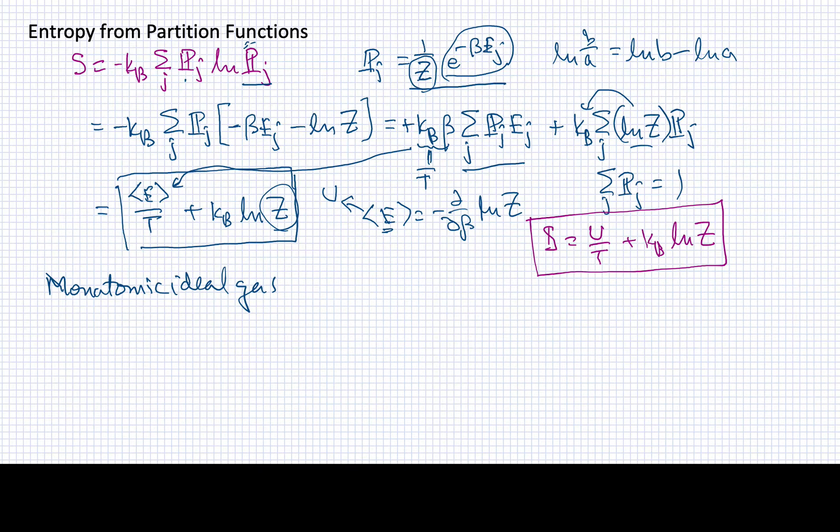For this monatomic ideal gas, I can write the system partition function as equal to the molecular partition function over n factorial. It's a monatomic gas, so the only thing that's happening is translational motion. The only portion of the partition function we're going to have is the translational part divided by n factorial.